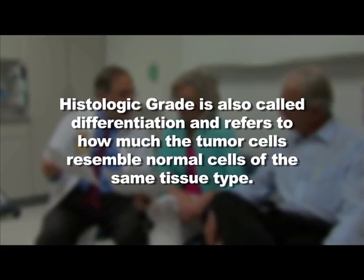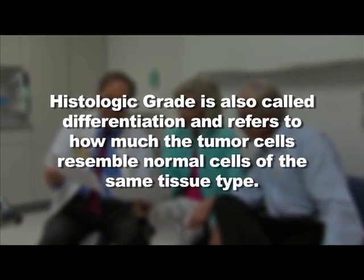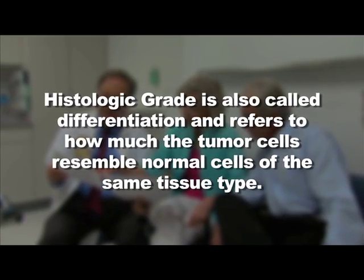Histologic grade — grading is a description of the microscopic appearance of the cells. It is informative to the clinician in that it depicts the degree of abnormality of the cells. When you assign a high histologic grade to a cell, it implicitly informs the clinician that this is a tumor with a tendency toward an aggressive clinical course.